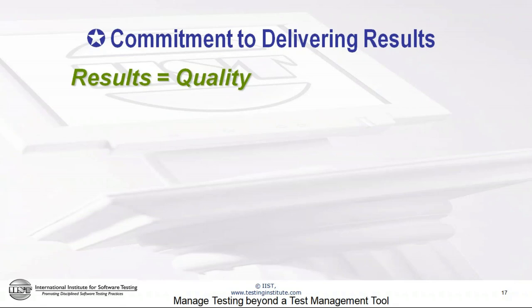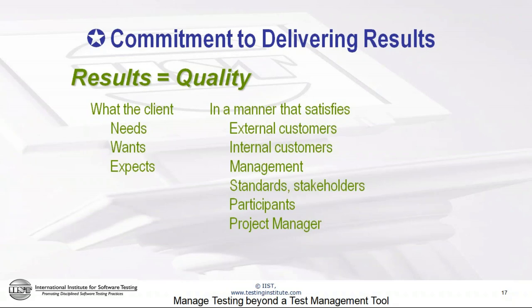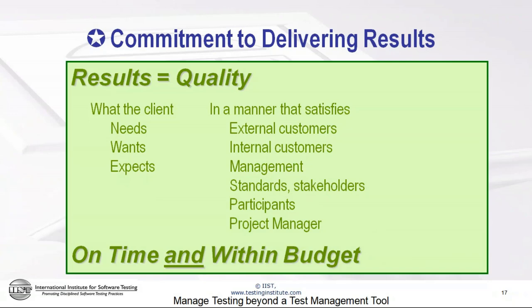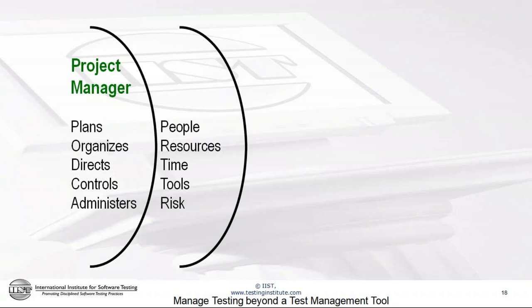Too many projects and project managers don't understand this and instead give up and deliver excuses. So commitment to delivering results — and let's equate results with quality — that's what people want: what the client needs, wants, and expects in a manner that satisfies external and internal customers, management, various standards, other stakeholders, participants, and the project manager. It's quality on time and within budget, and that's what perseverance gets us to.